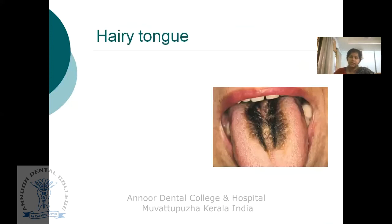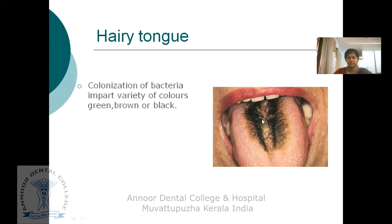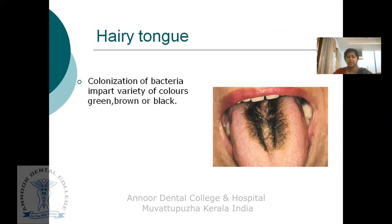Another type of exogenous pigmentation is hairy tongue, usually seen on the dorsum of the tongue. Here you can see the colonization of bacteria on the dorsum of the tongue. These are chromogenic bacteria that can produce different colors including green, brown, or black.